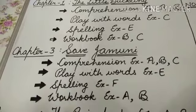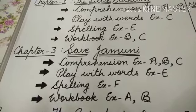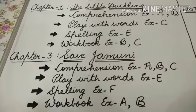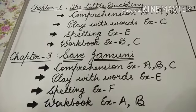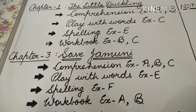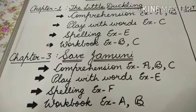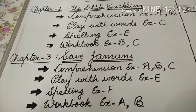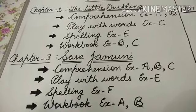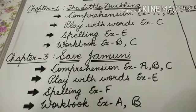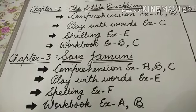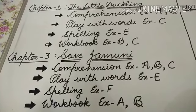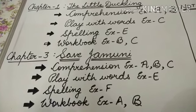The next lesson is Lesson No. 3, Save Jamuni. Comprehension Exercise A, B, C, Play with Words Exercise E, and Spelling Exercise F from the reader book. And from the workbook, Exercise A and B of this lesson are included in the syllabus.